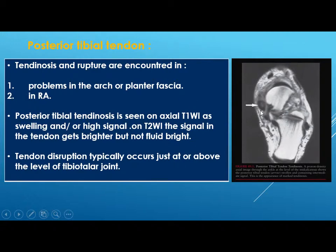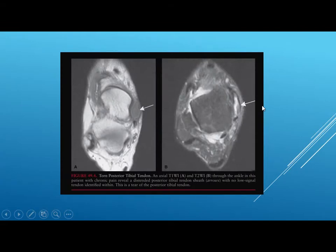The posterior tibial tendon is related to problems in the plantar arch. Posterior tibial tendinosis is seen on axial T1 as swelling or high signal, and on T2 the signal of the tendon gets brighter but not fluid-bright. Tendon disruption typically occurs just at or above the level of the tibiotalar joint. A torn posterior tibial tendon shows swelling of the sheath with no low-signal tendon within it.